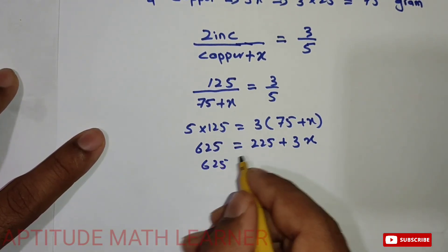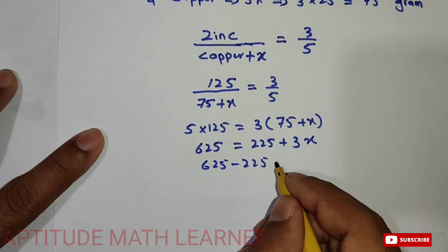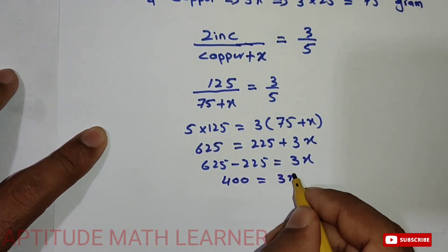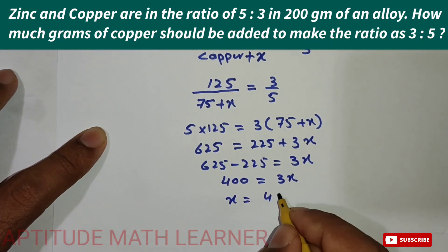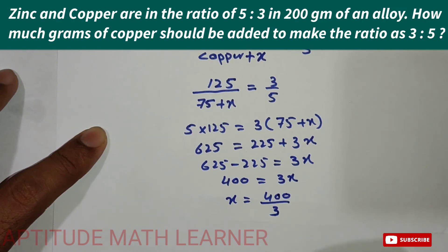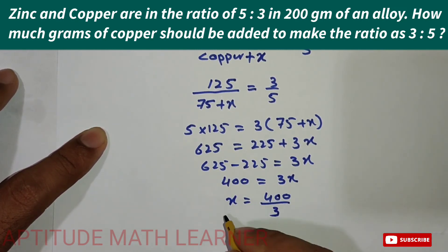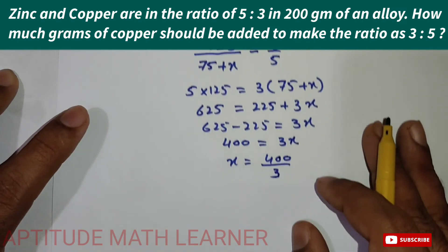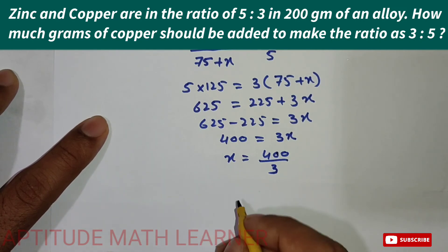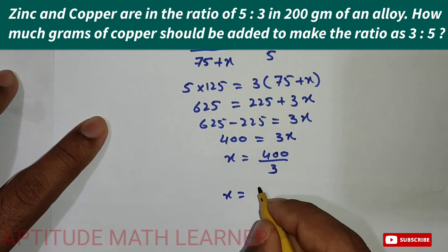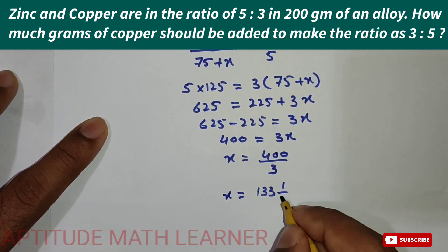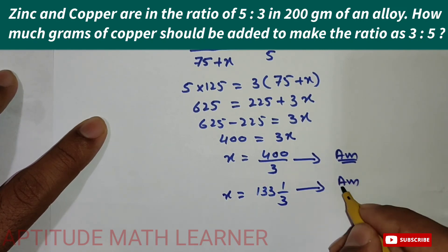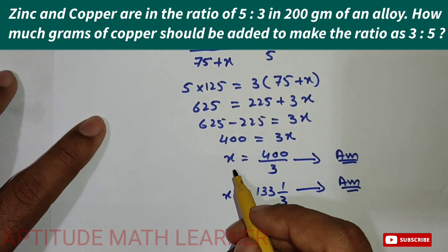From 625 = 225 + 3x, we get 625 minus 225 = 3x, so 400 = 3x, and therefore x = 400/3. This is the amount of copper in grams to be added to make the new ratio 3:5. The answer is x = 400/3 grams, which is approximately 133.33 grams.